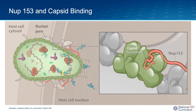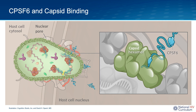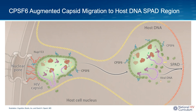These host proteins can be thought of as helping to guide the HIV core through the nuclear pore. As shown here, as the HIV core reaches the nuclear pore, the NUP153 proteins bind to and interact with the HIV capsid proteins. In the same manner, as the HIV core starts to move through the nuclear pore, the CPSF6 proteins also bind to the HIV capsid proteins. The CPSF6 proteins have an additional role — after the HIV core has moved through the nucleus, the CPSF6 proteins help to guide the dissolving capsid to a specific integration region of the host DNA known as the speckle-associated domain, or SPAD.